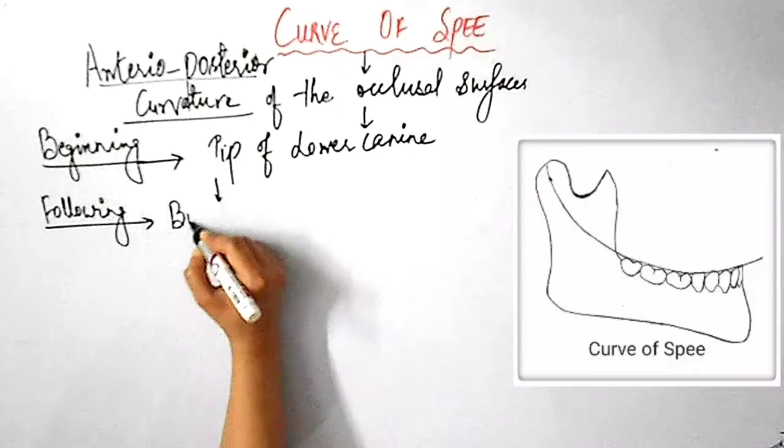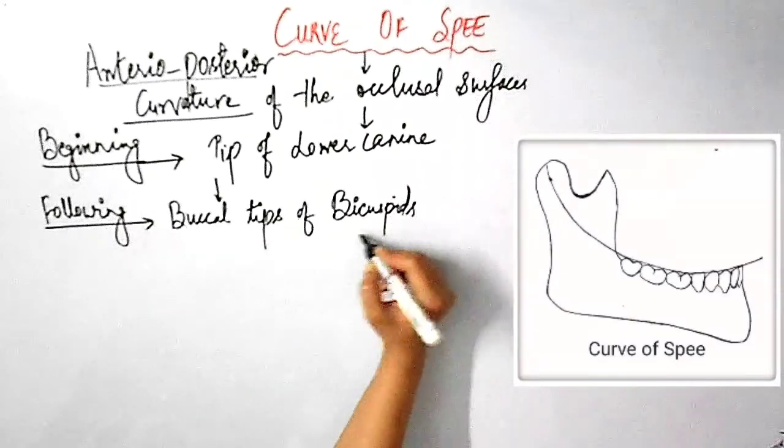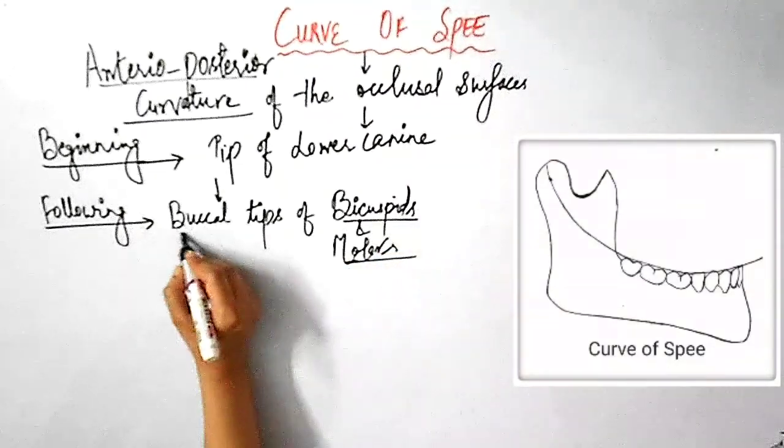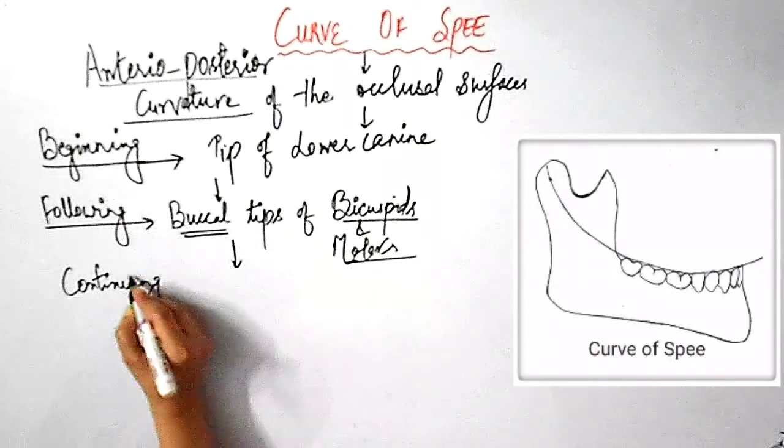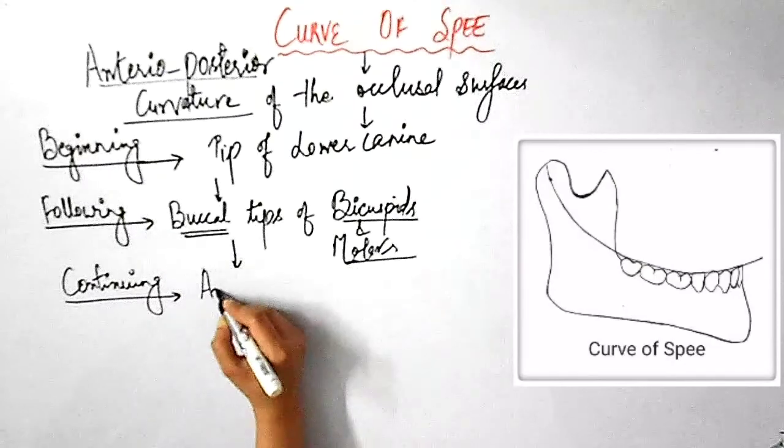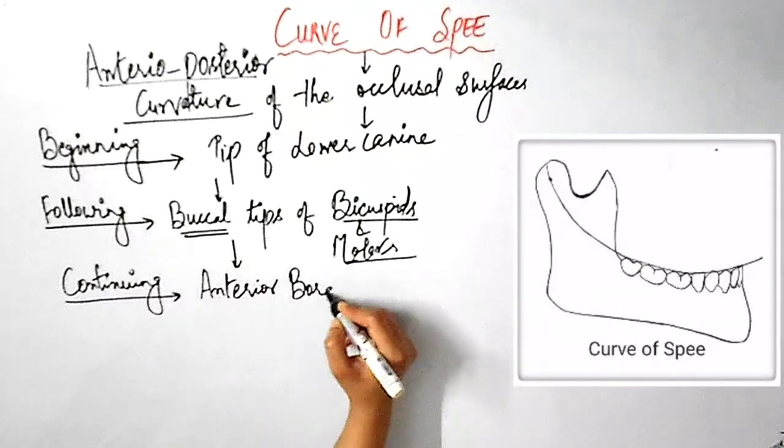That means the curve of Spee begins at the tip of the lower canine, follows the buccal tips of the posteriors and continues towards the anterior border of the ramus, as you can see in this picture.